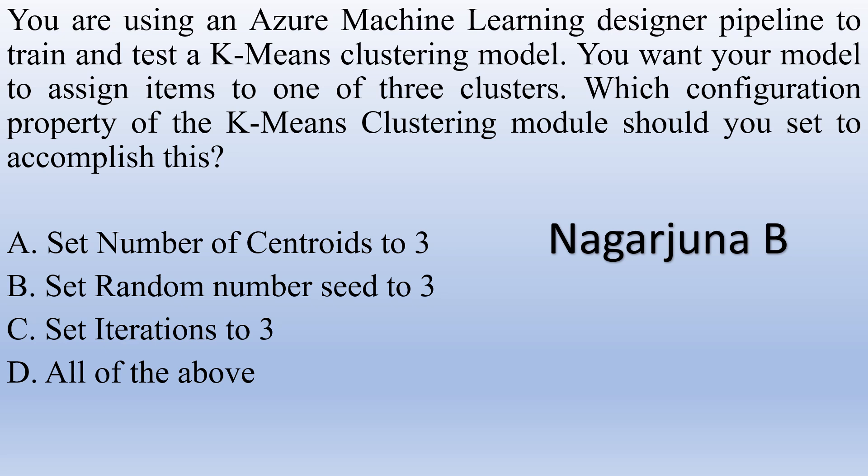You are using an Azure Machine Learning designer pipeline to train and test a K-means clustering model. You want your model to assign items to one of three clusters. Which configuration property of the K-means clustering model should you set? Option A: Set number of centroids to three. Option B: Set random number seed to three. Option C: Set iterations to three. Option D: All of the above. The right answer is set number of centroids to three.